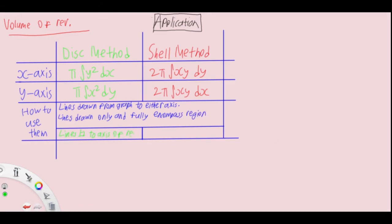The lines drawn must only and fully encompass the region you're rotating. For disk method, lines are perpendicular to the axis of revolution. For shell method, lines are parallel to the axis of revolution.